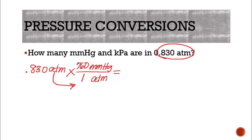So then all you have to do is do the math. Take 0.830, multiply it by 760, divide it by 1, which does nothing, and we get 630.8 millimeters of mercury. So a simple conversion here.